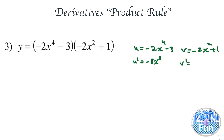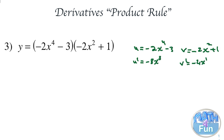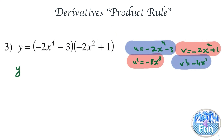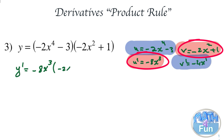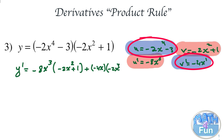For v prime: drop down the 2 and multiply by negative 2 to get minus 4x to the power 1, and the derivative of 1 is 0. Now we apply u prime v plus v prime u. y prime equals minus 8x to the power 3 multiplied by minus 2x squared plus 1, plus minus 4x multiplied by minus 2x to the power 4 minus 3.